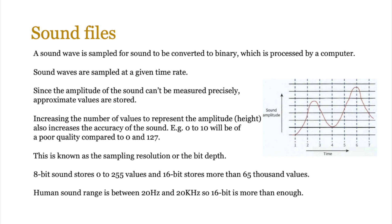A sample is a little piece of sound recorded at regular time intervals. Since the amplitude of the sound can't be measured precisely because it's analog, approximate values are stored. The amplitude is basically the height of the wave. We take samples at various time intervals and join them together to create an approximation of the sound wave. Increasing the number of values to represent the height also increases the accuracy of the sound. With more bits we have more levels, allowing us to draw the graph more precisely, and the sound will be more accurate.